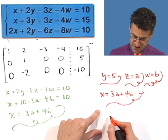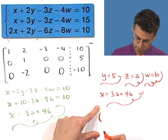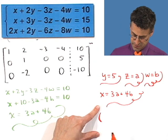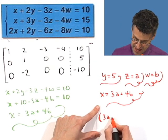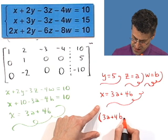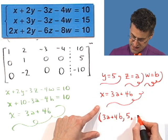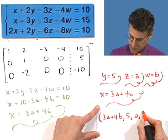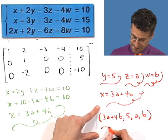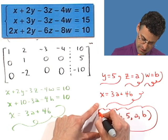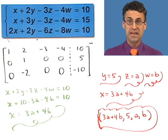And so the solution can be written as an ordered, in this case, a quartable. 3a plus 4b, that's x, then I write y, that's the number 5, then I write the z, which is a, and then I write the w, which is b. And that is the answer. So there are infinitely many solutions.